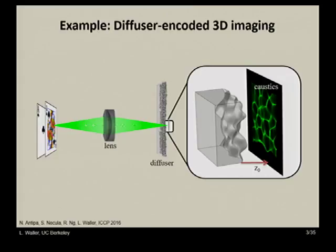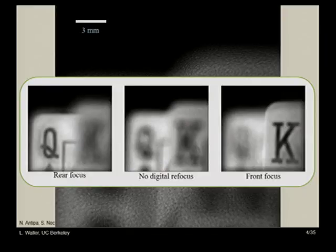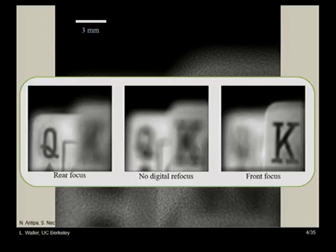Another example from the lab: we're doing light field imaging but we can't afford to make fancy lenslet arrays. For some reasons it might be better to just use whatever you have. So we take a diffuser — a piece of privacy window glass — you put it on your window so light comes in but you can't see through because it's all scattered. We take a picture; it looks like a bunch of caustics. We carefully design the distances so that both wave optics and ray optics apply, and then run an inverse problem to solve for the light field. Because we've pre-characterized the diffuser, we can do an inverse problem and do digital focusing.